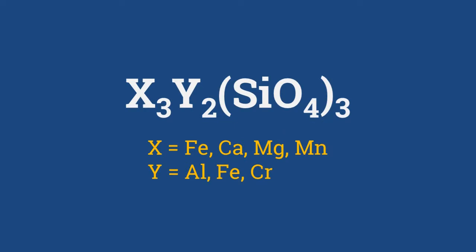The chemical composition of garnet is X3Y2(SiO4)3, where X is a divalent metallic ion of iron, calcium, magnesium, or manganese, and Y is a trivalent metallic ion which may be aluminium, iron, or chromium. So in composition, garnets are essentially silicates of various divalent and trivalent metals.